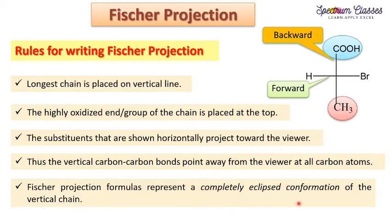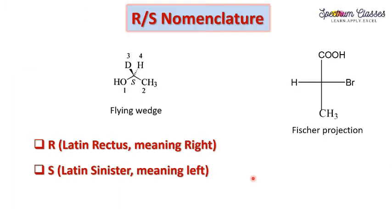The Fischer projection formula represents a completely eclipsed conformation of the vertical chain. So if we draw the Newman projection from a Fischer projection, the Newman projection we get is an eclipsed conformation rather than staggered. Now let us represent the RS nomenclature. This is the flying wedge structure of a molecule with a chiral center — a three-dimensional representation — which can also be drawn as a Fischer projection on the two-dimensional plane.